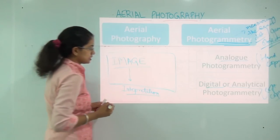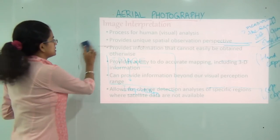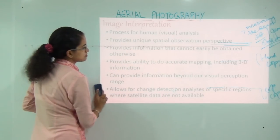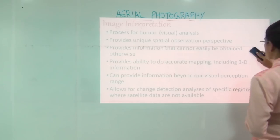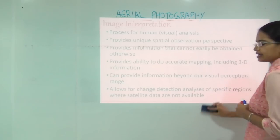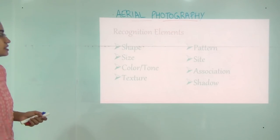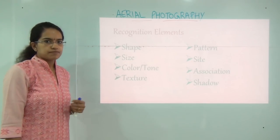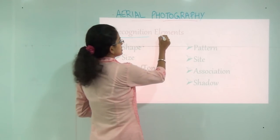Image interpretation basically tries to understand a few basic things. First, what we are trying to understand should be visible to our eyes. We try to map it accurately, perceive it, obtain various angles of information, and finally try to analyze specific regions and specific areas. We can analyze these images based on eight parameters, which we call recognition elements.